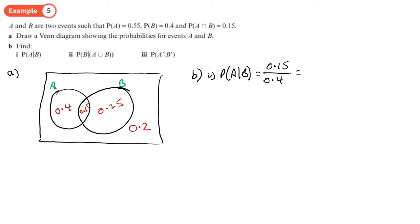We'd probably want to simplify that because you don't really want to leave that as a decimal mixed with a fraction. So 15 over 40, which we can simplify. Divide both by 5 to give you 3 over 8.